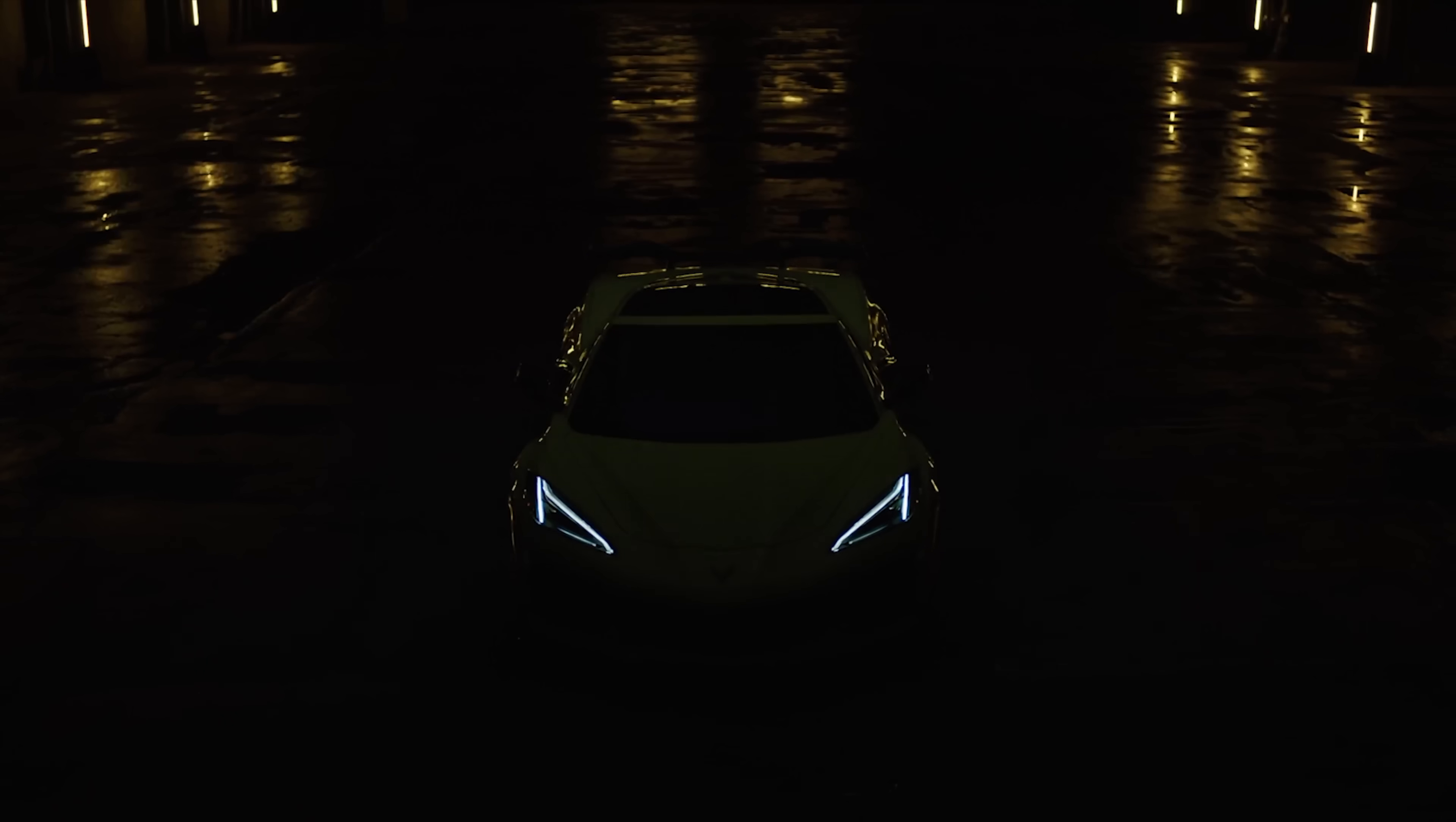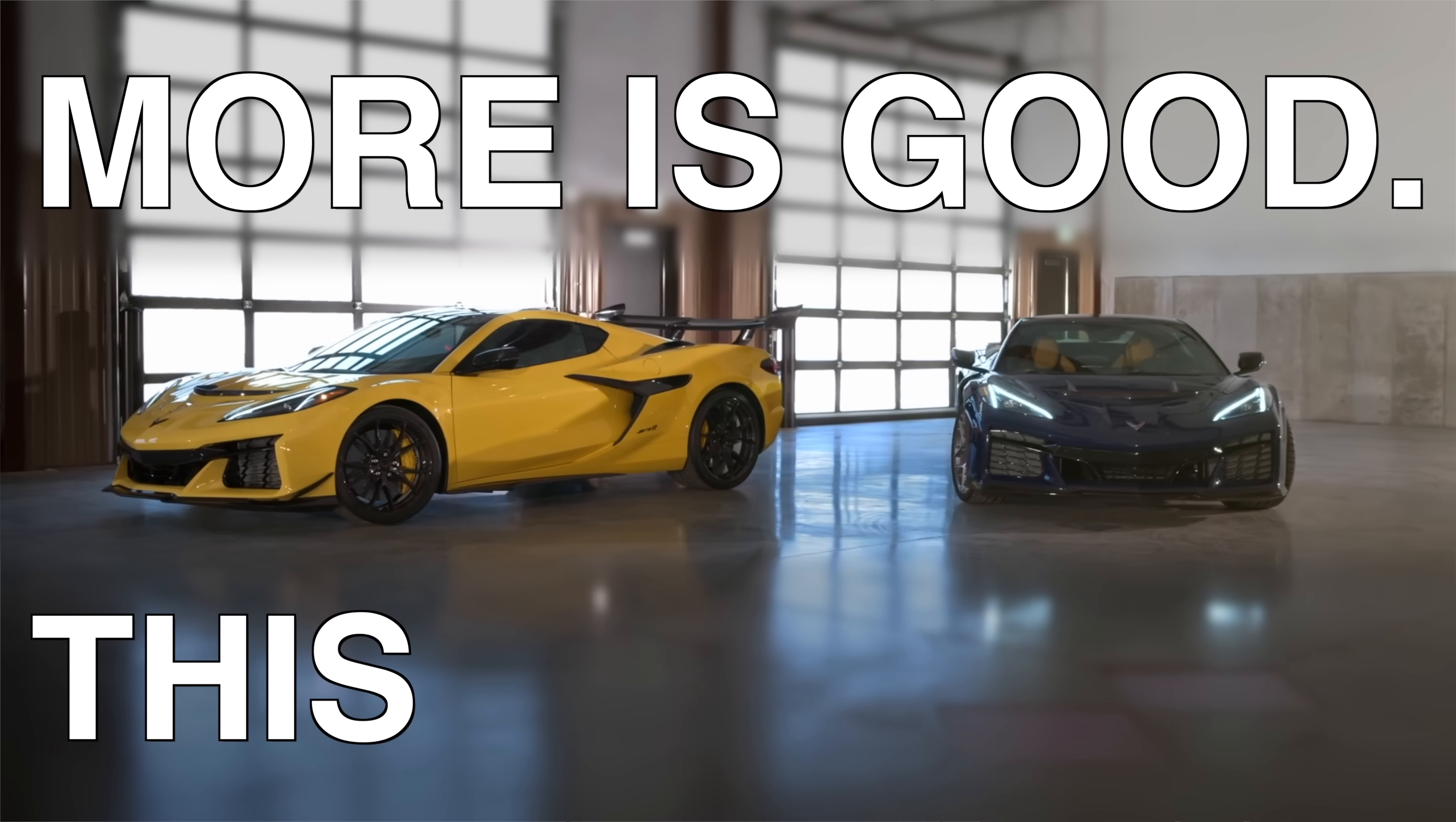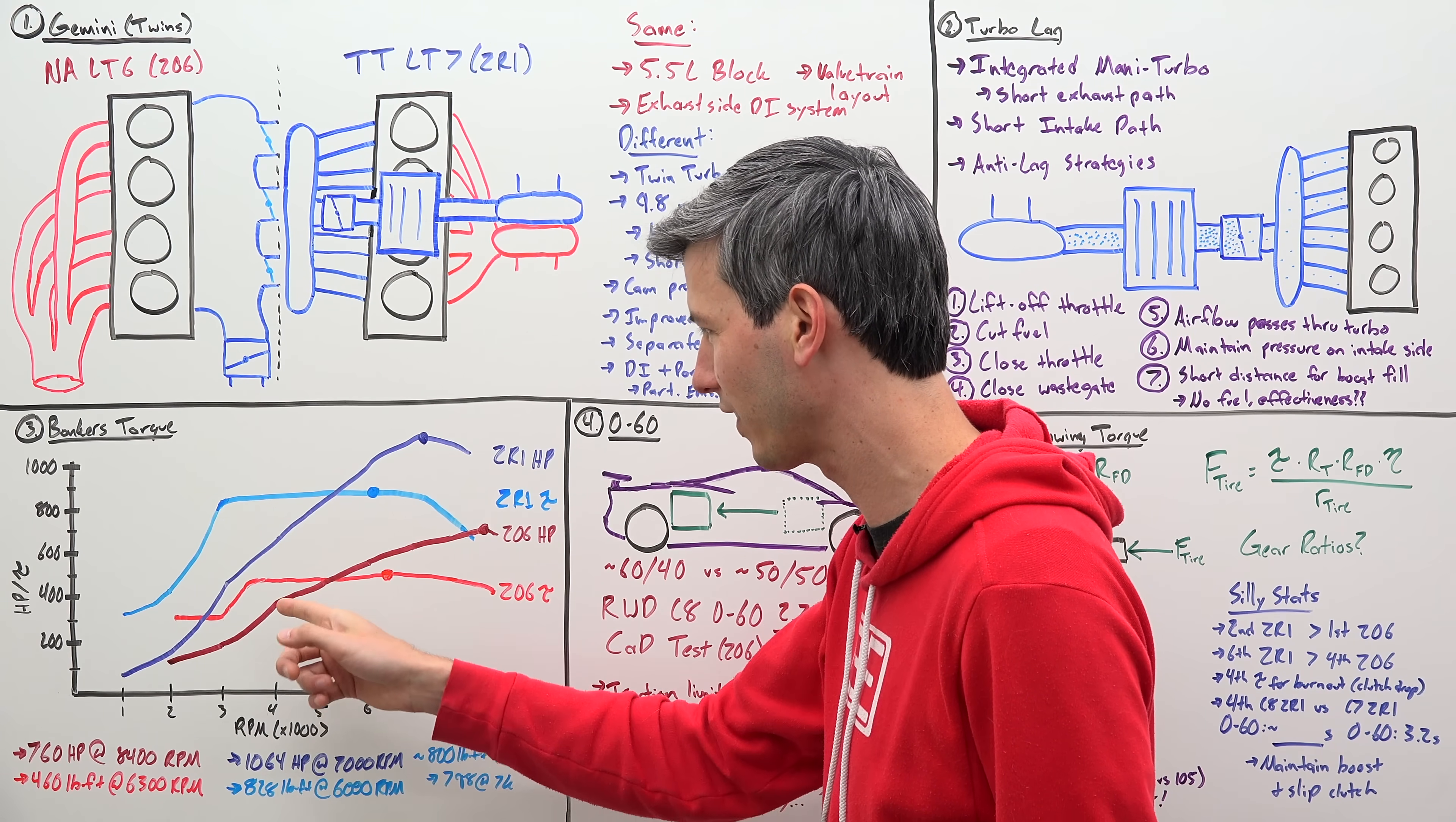Now, if you were sad because the Z06 had less engine torque than a base C8 Stingray, well, you don't have to be sad any longer because the ZR1 has 828 pound-feet of torque. And for the rest of the world that doesn't understand what the heck a pound-foot is, hey, don't worry, neither do we. All you have to know is that more is good, and this has more. Alright, so looking at horsepower and torque, it's absolutely absurd. Here we have RPM, here we have horsepower and torque. And looking at these here, okay, so light red is Z06 torque, darker red is Z06 horsepower, light blue is ZR1 torque, dark blue ZR1 horsepower.